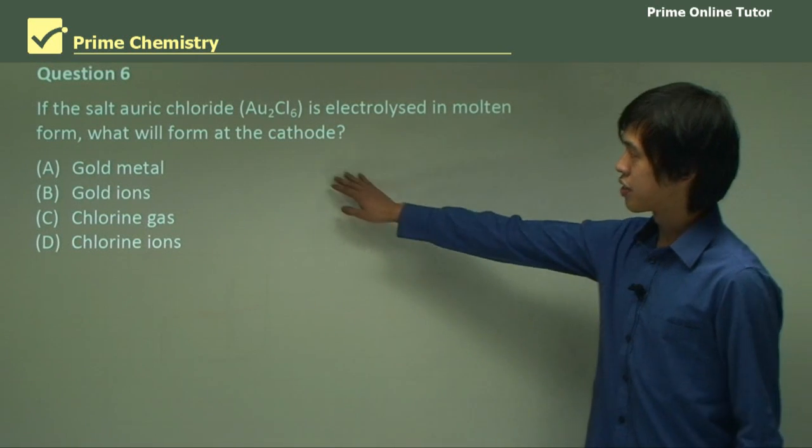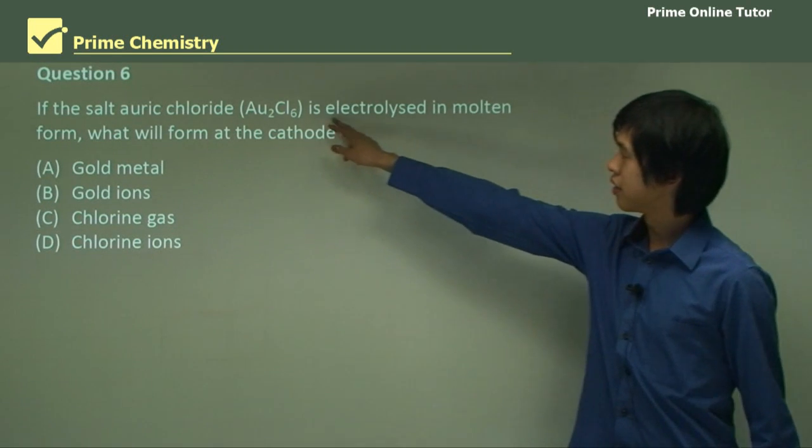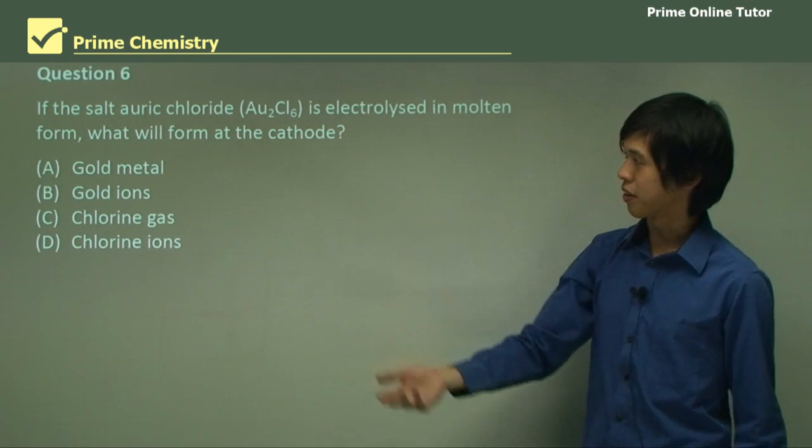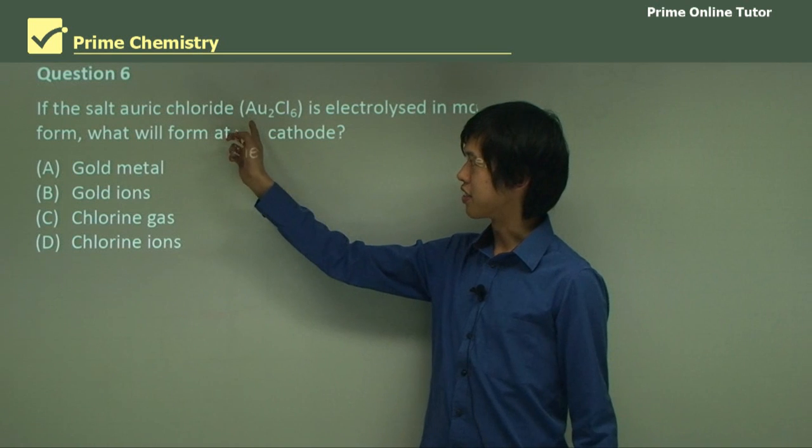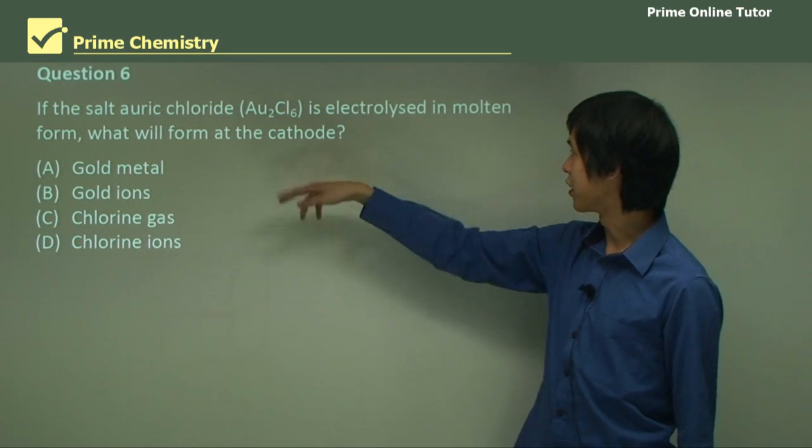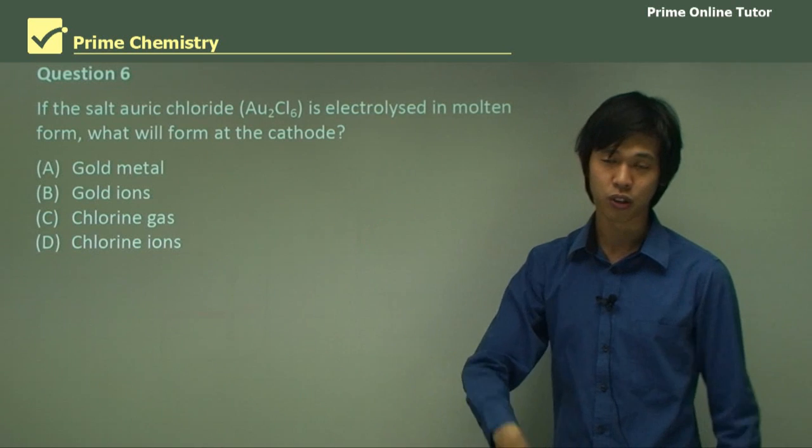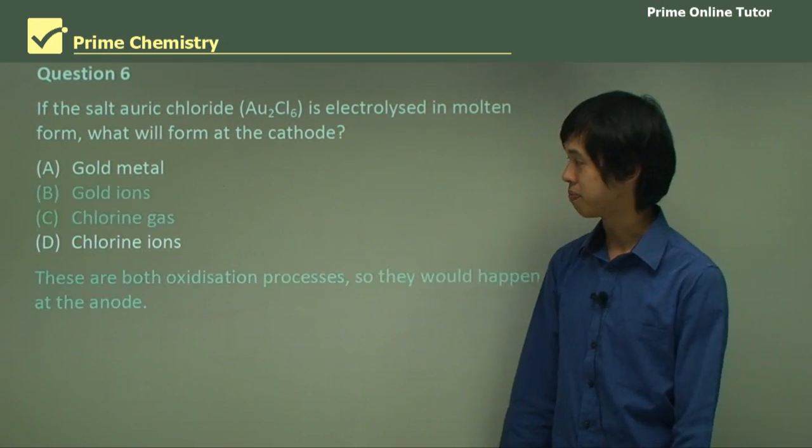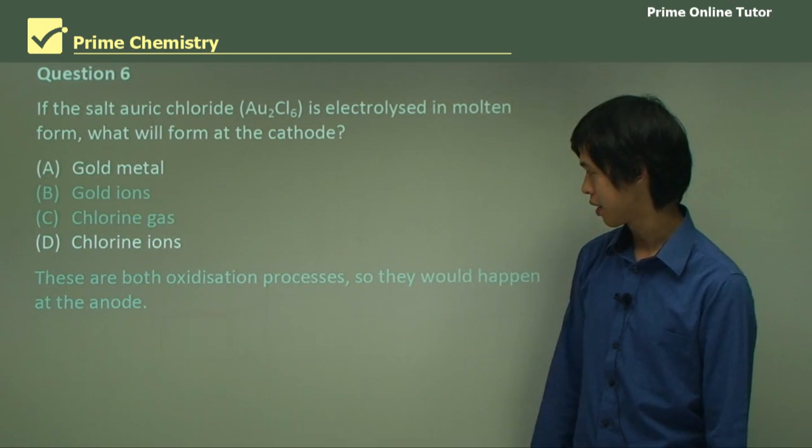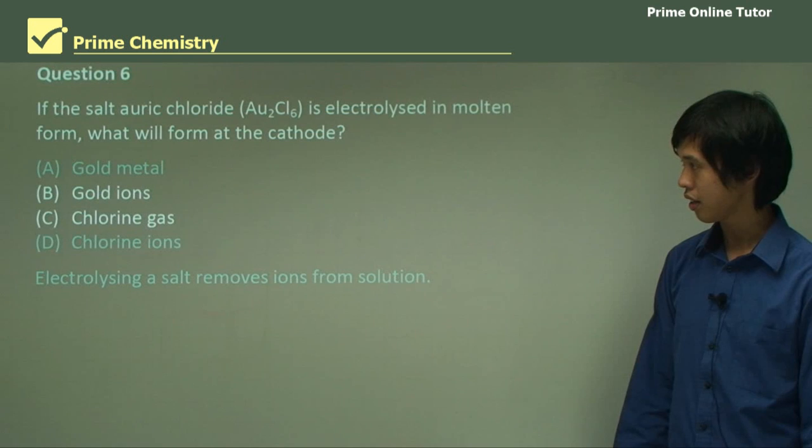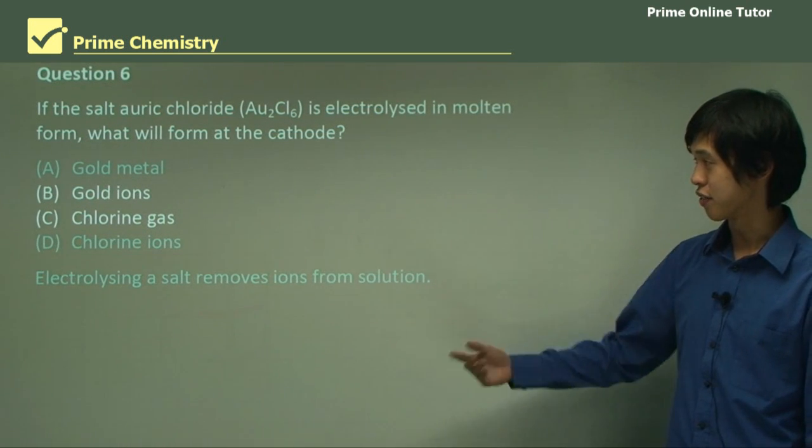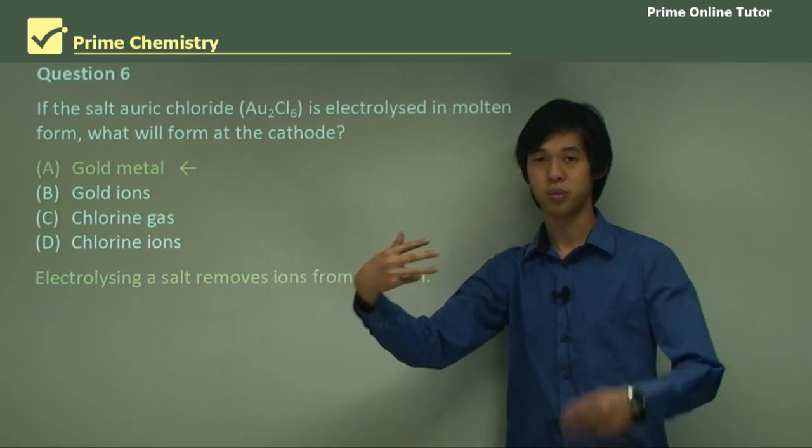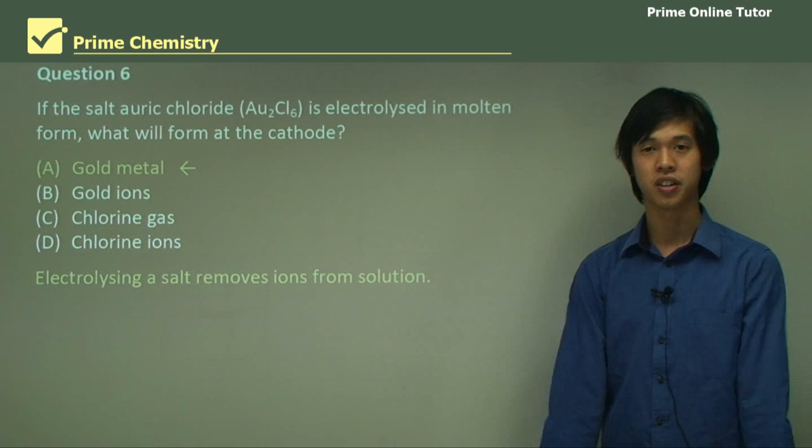Question 6: If the salt auric chloride is electrolyzed in molten form, what will form at the cathode? Auric chloride is just gold, two golds and six chlorides, Au2Cl6. If we electrolyze it, what will form at the cathode? Well, reduction will occur, so this thing will reduce, so it should form gold metal. Neither of those two things should happen because they're both oxidation processes. And electrolyzing a salt removes ions from salt solution. So it's gold metal because we're reducing this ion into the gold metal, which is zero oxidation number.